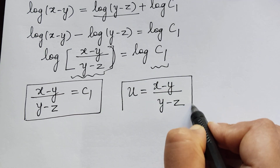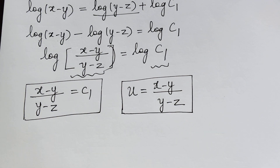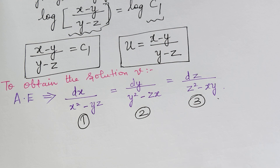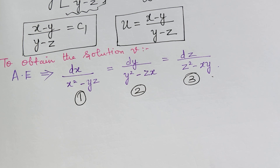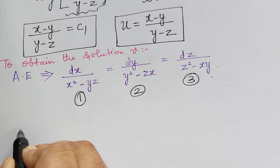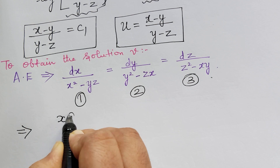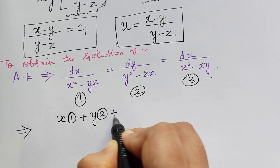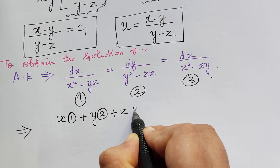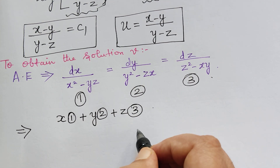Therefore, the first solution u equals (x minus y) divided by (y minus z). So we have obtained the first solution u. Next, we have to obtain the second solution v. We write the auxiliary equation once again and will perform a different operation on it.